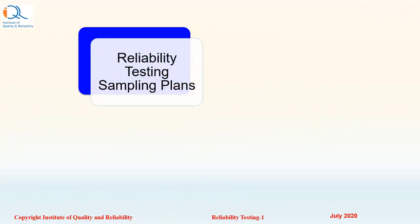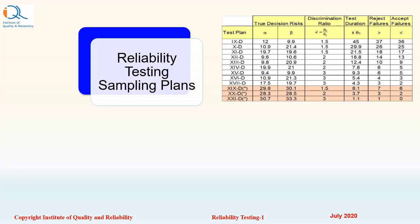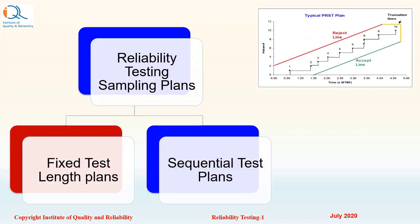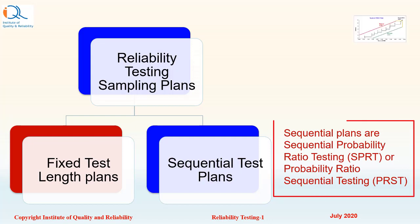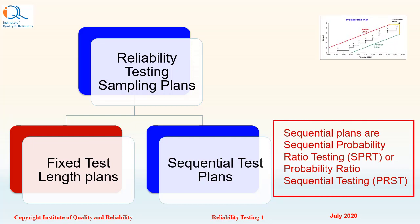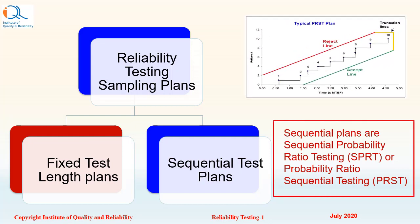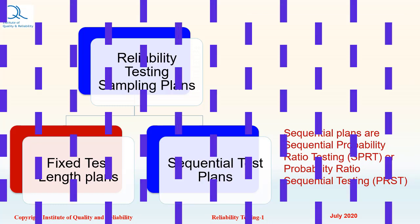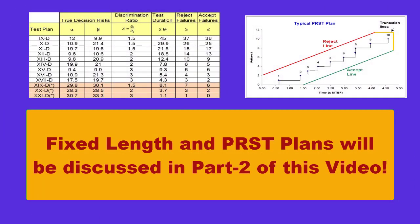Reliability testing sampling plans can be of fixed length or sequential test plans. The sequential plans are sequential probability ratio testing or SPRT, also called probability ratio sequential testing or PRST plans. Fixed length and PRST plans will be discussed in part 2 of this video.